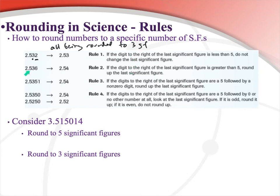To round 2.536 to three significant figures: the third significant figure is the 3, and it's followed by a 6. Rule two says if the digit to the right is greater than 5, round the last significant figure up. So the 3 rounds up to a 4, giving 2.54. Most of you would be comfortable with those rounding rules.